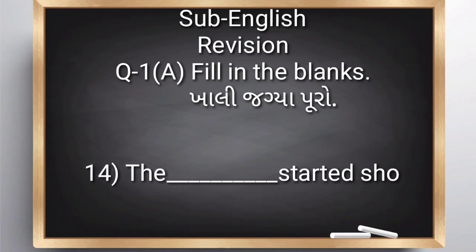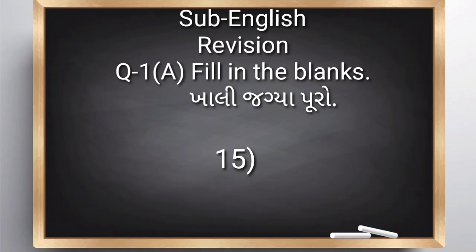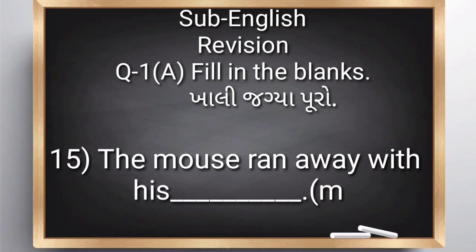Fourteenth: 'The blank started shouting.' Option: Mouse or Taylor. Friends, as we learned in our story – does the Taylor shout, or does the Mouse? The answer is Mouse. Fifteenth: 'The mouse ran away with his blank.' Option: Map or Cap? Cap. The mouse ran away with his cap.